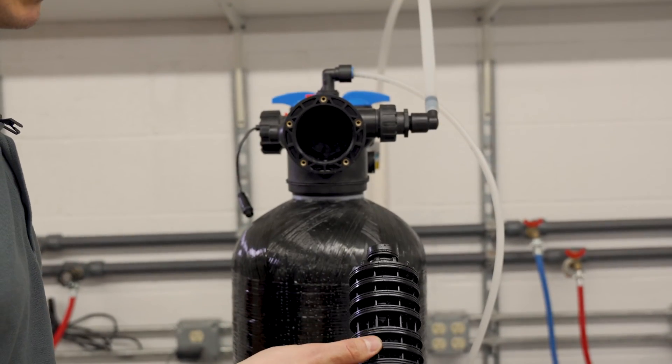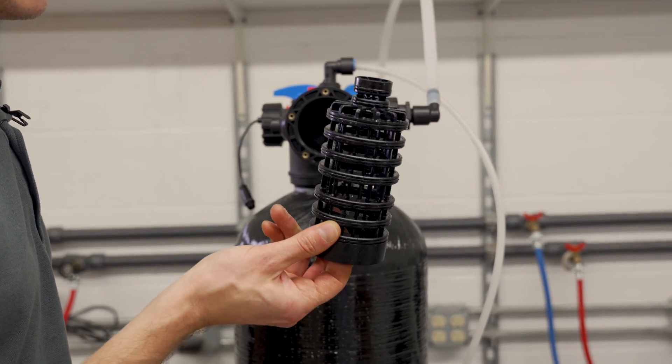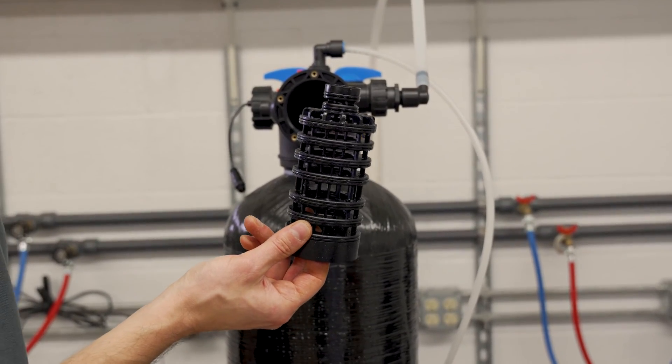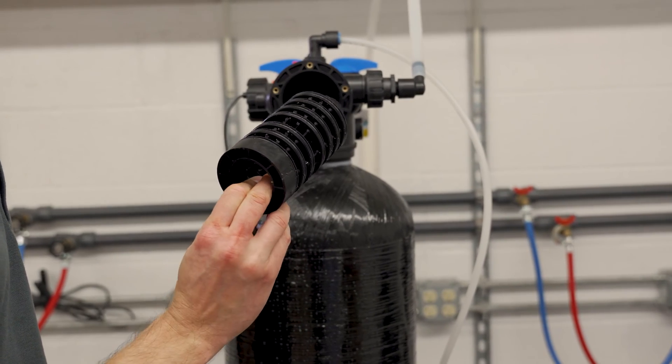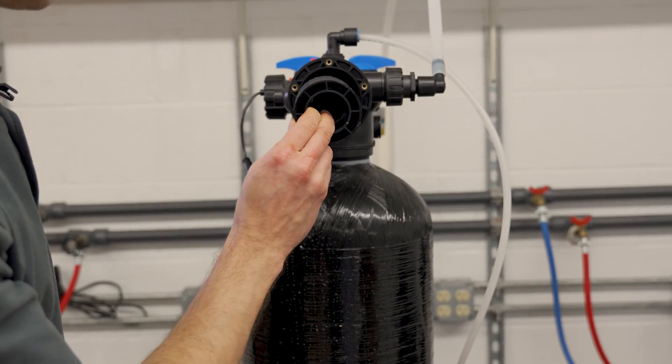If you're replacing the seal stack, you'll want to put some silicone lubricant on all of the o-rings. You want to make sure not to use anything petroleum based, make sure to use a food grade silicone.